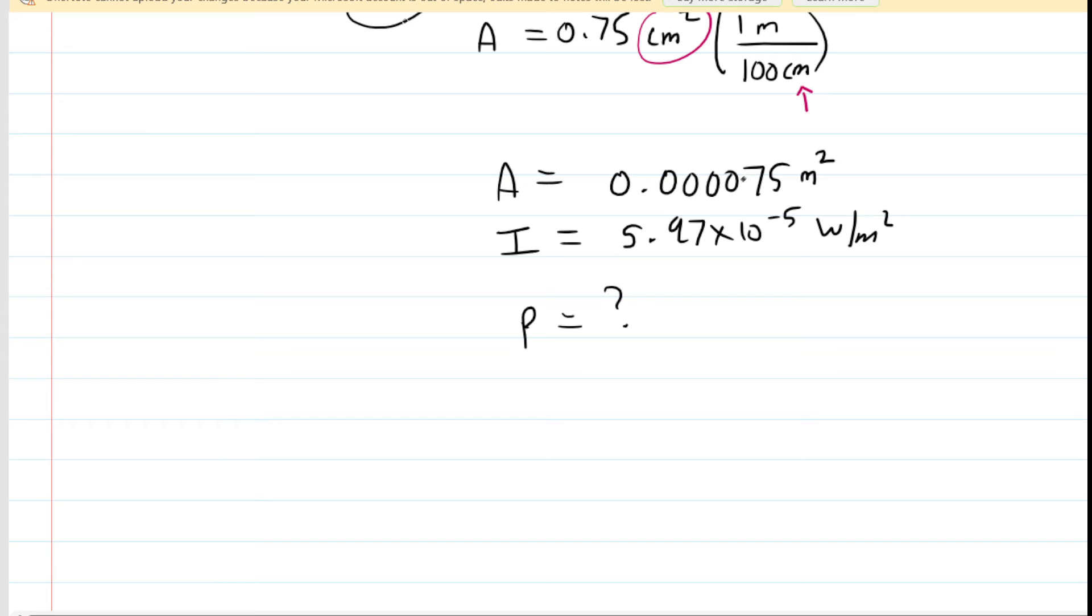And the answer would be to multiply them because as we will see in a moment, when we multiply the intensity by the area, we're going to be left with the standard unit of power, which is watts. So let's take the intensity and multiply it by the area.